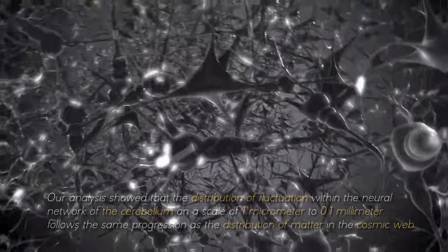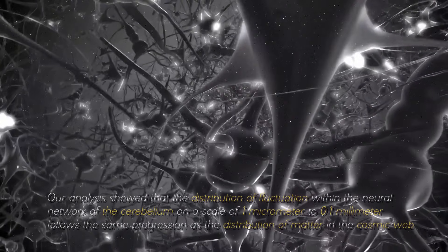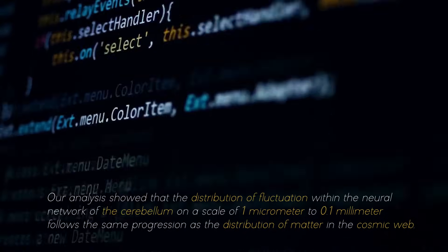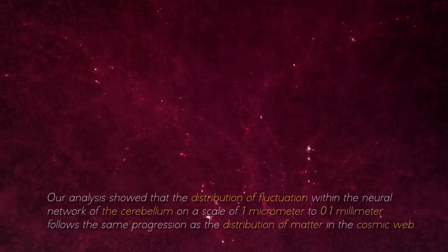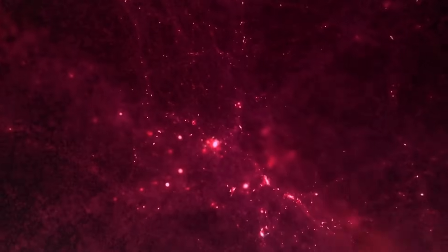Our analysis showed that the distribution of fluctuation within the neutral network of the cerebellium on a scale of 1 micrometer to 0.1 millimeters follows the same progression as the distribution of matter in the cosmic web, commented one of the researchers in charge of this project.